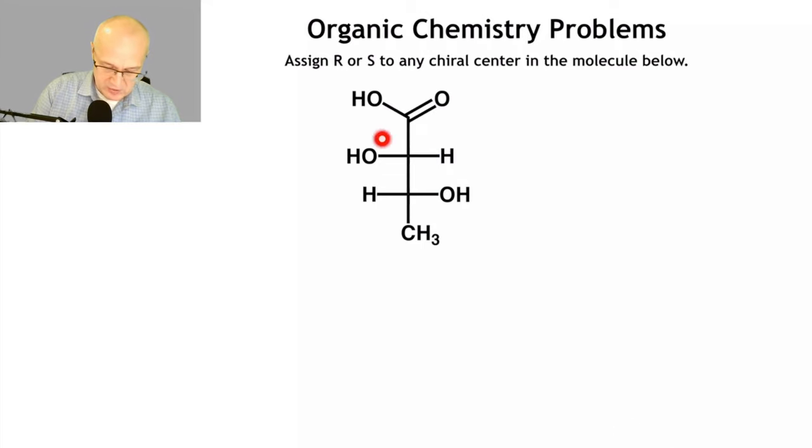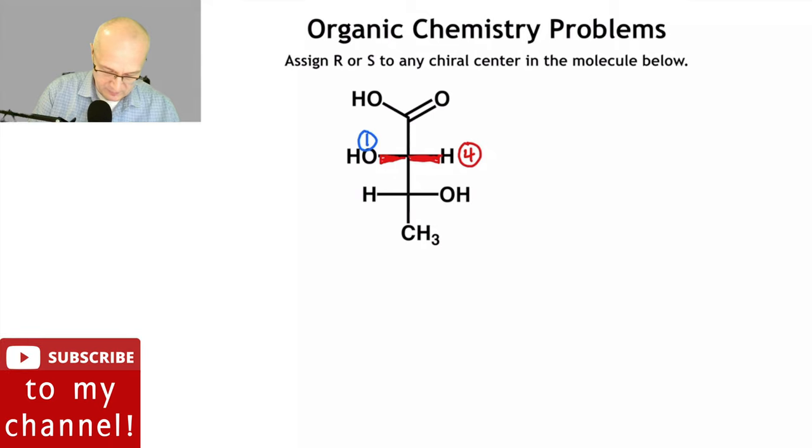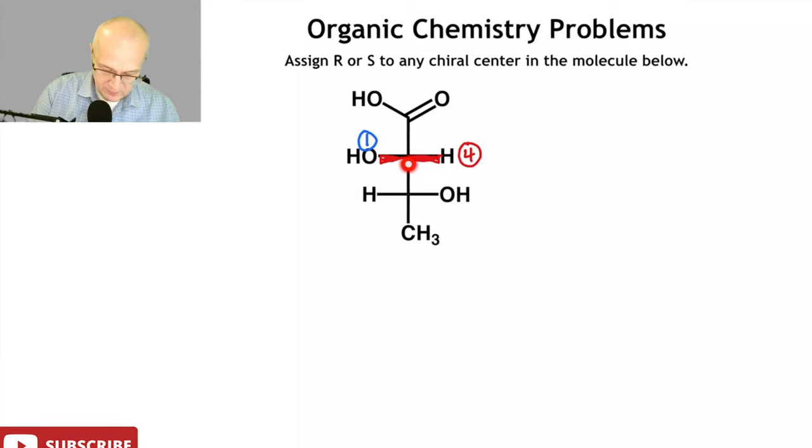Let's do this chiral center first. So we know that this is coming towards us, and this is coming towards us. We know that that is number four. We also can predict very easily that this is number one. Chiral centers here, jump out one atom in all directions. Hydrogen versus oxygen versus carbon versus carbon. So this is obviously one and four.